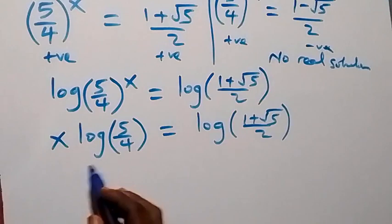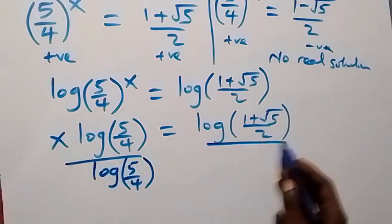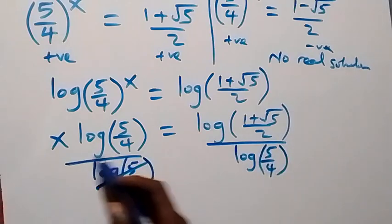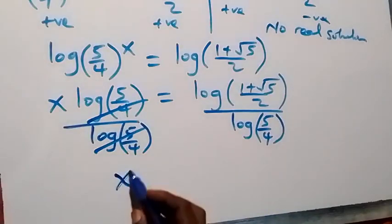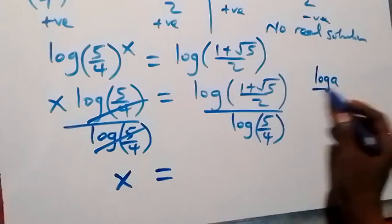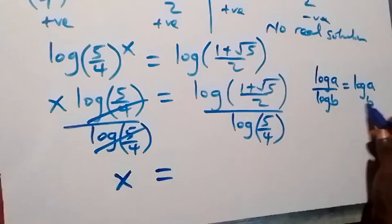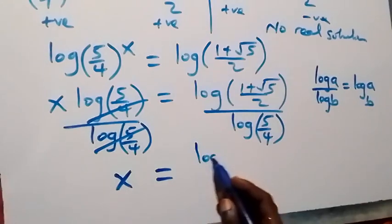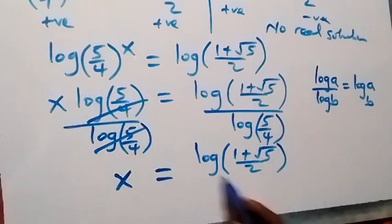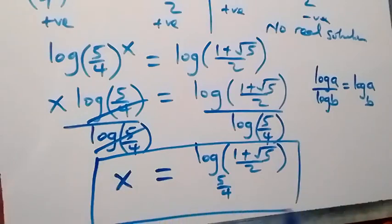To get x, we divide both sides by log(5/4). Using the change-of-base rule — log A over log B equals log A to base B — we can write the final answer as x equals log base (5/4) of ((1 + √5)/2). This is the value of x for the given problem.